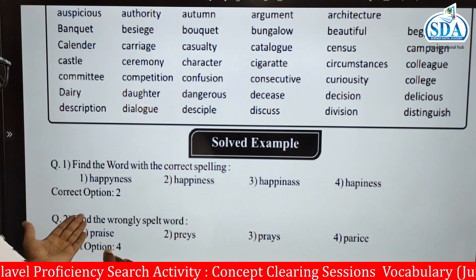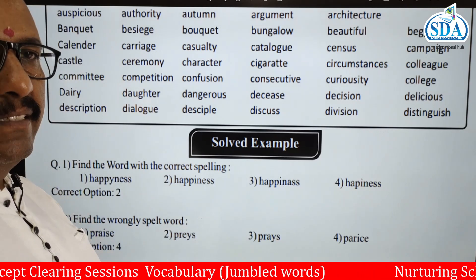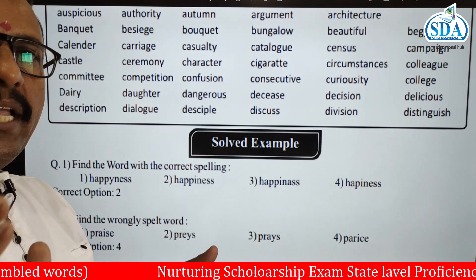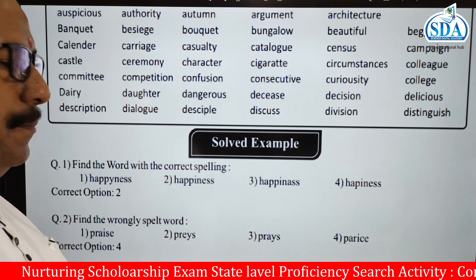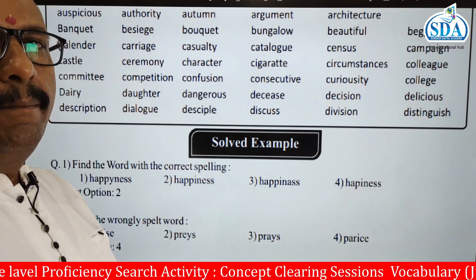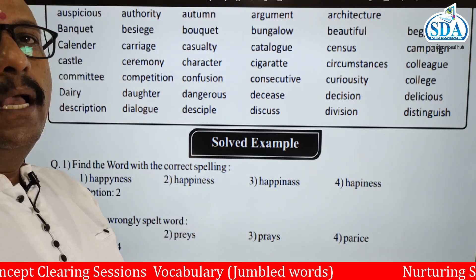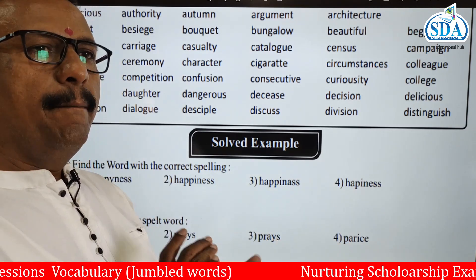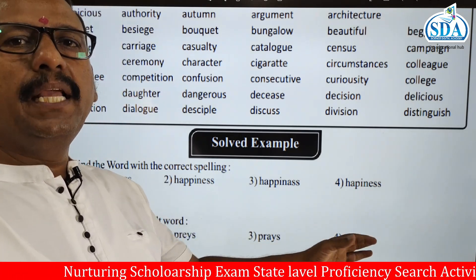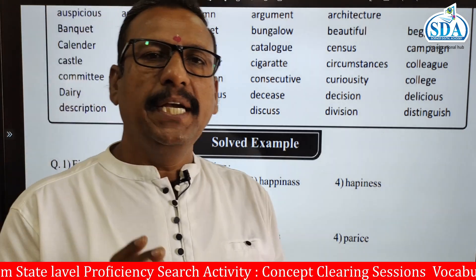For example number two, find the wrongly spelled word. Here praise, praise, praise, and paris are given. Praise is P-R-A-I-S-E meaning stuti karne. The second P-R-E-Y-S and third P-R-A-Y-S are both meaningful words. Paris should have a capital letter but the spelling is misspelled here, so paris is the wrongly spelled word.